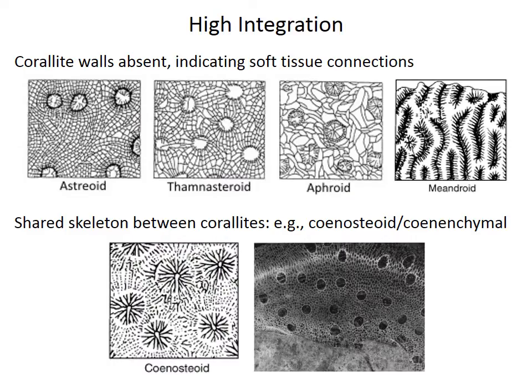In contrast, we can look at high integration levels by noting that the corallite walls might be absent. In the case of the asterioid, thamnasterioid, and aphroid, they all have some variety of reduced walls and shared septa, indicating that their gastrovascular systems might have been confluent — that is, joined.